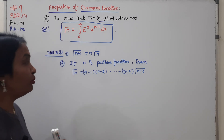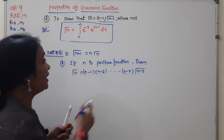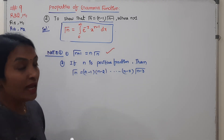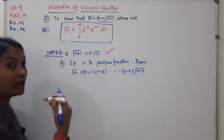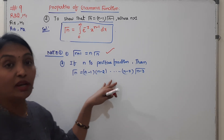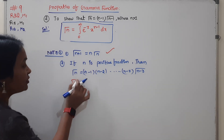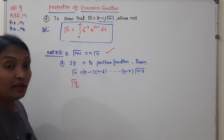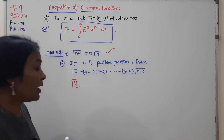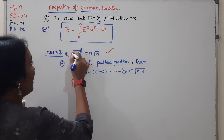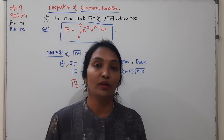Note: Gamma(n plus 1) is also equal to n into gamma(n). If n is a positive fraction, gamma(n) equals n minus 1 times n minus 2 and so on times n minus r into gamma(n minus r). We will use this property in problems. Next property in the next video.